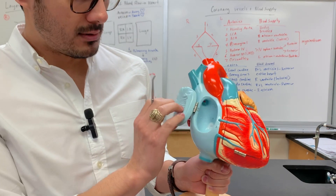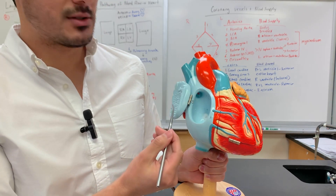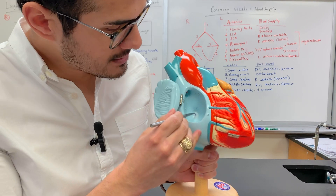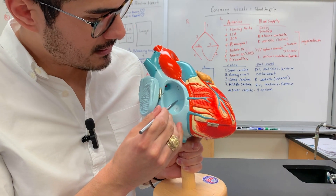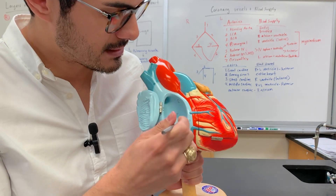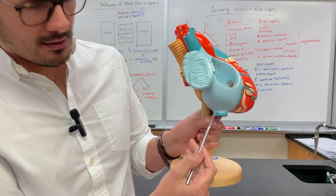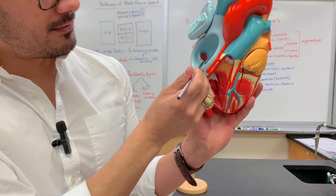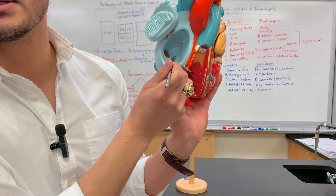If we open the right atrium we'll see one of the muscles here. This is the pectinate muscle, and then this is what's known as the fossa ovalis. This is the limbus of the fossa ovalis. Coming from the bottom, this is the inferior vena cava.